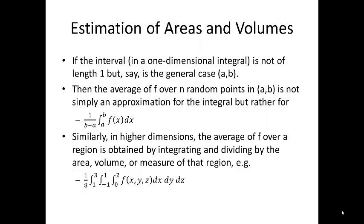If the interval in a one-dimensional integral is not of length 1 but, say, (a,b), then the average of f over the n random points in (a,b) is not simply an approximation of the integral, but rather 1/(b-a) times the integral from a to b of f(x)dx. This definition agrees with our intention that the function f(x) = 1 has an average of 1.